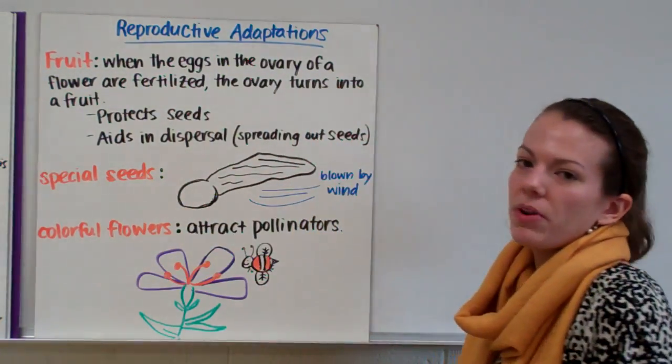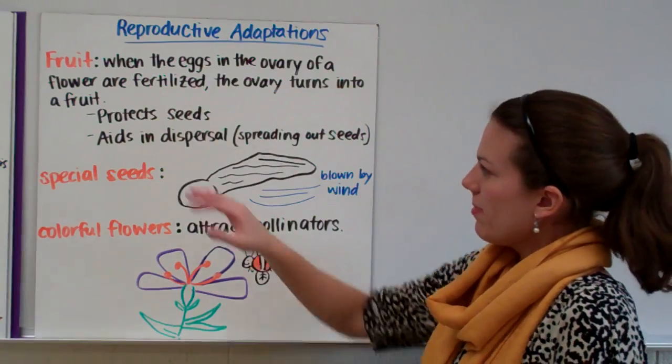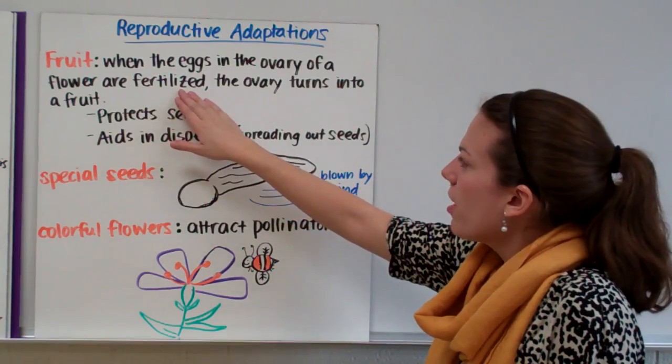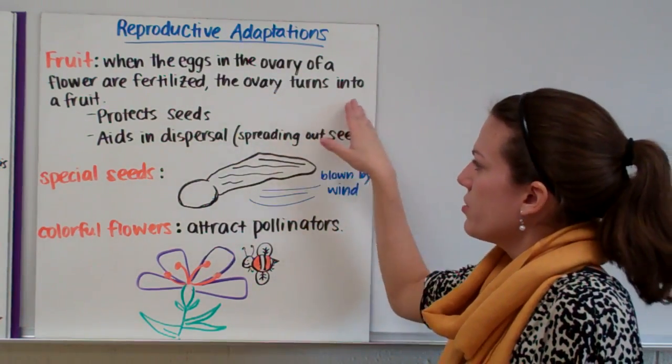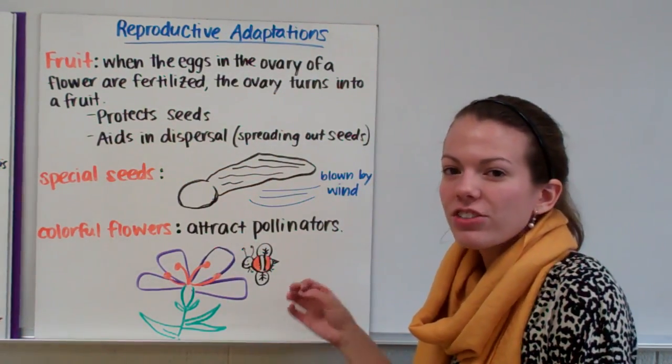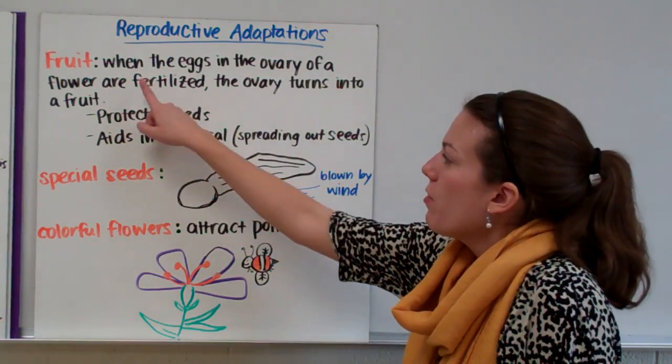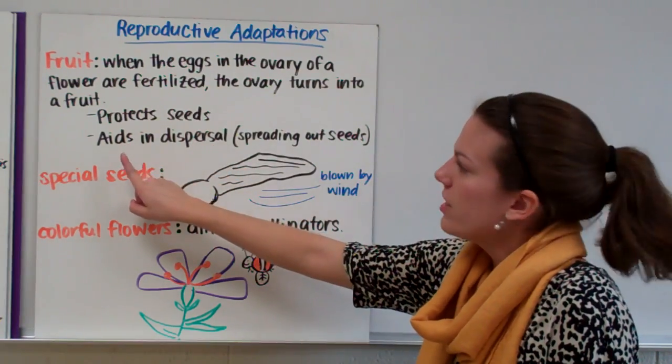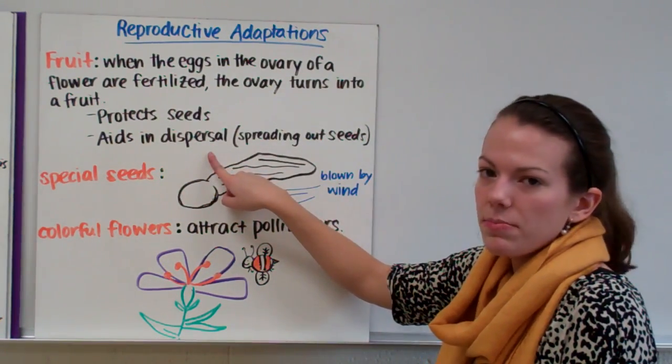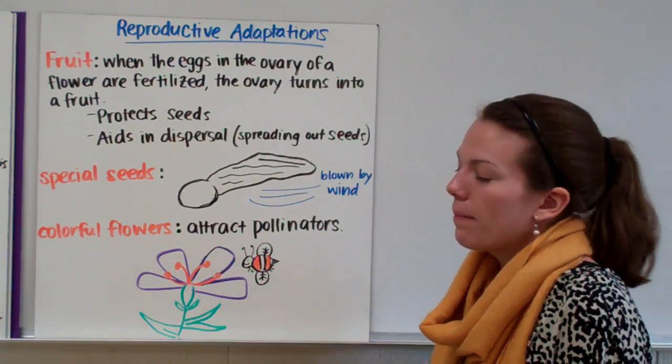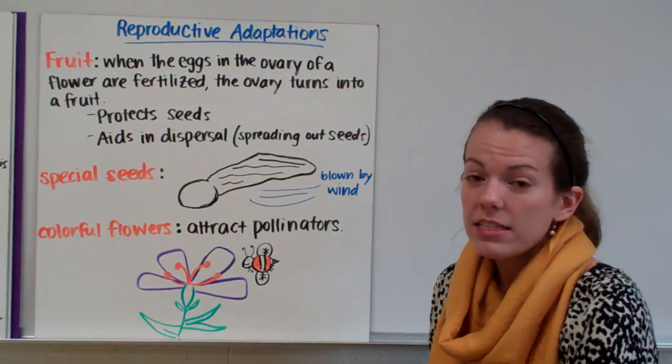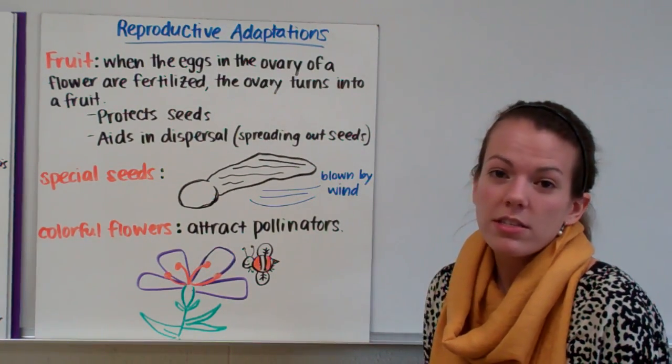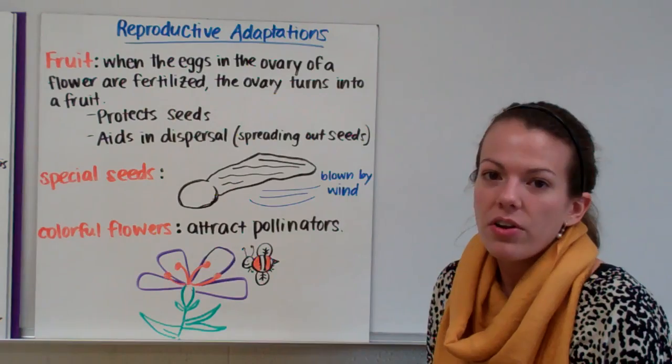Now for some more reproductive adaptations. So a fruit is what's formed when the eggs in the ovary of a flower are fertilized and the ovary turns into a fruit. So the ovary actually becomes the fruit of a plant. Now the fruit's purpose is to protect seeds. Another function is that the fruit aids in dispersal of the seeds, meaning it helps the seeds to spread out. Because if an animal eats that fruit then digests it, when it uses the bathroom it will release those seeds as it's walking around in its habitat.